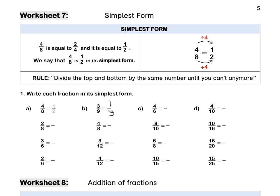For B, we can divide top and bottom by 3. Nine divided by 3 is 3 and 3 divided by 3 is 1. Let's look at C — we can divide 4 and 6 by 2. Six divided by 2 is 3 and 4 divided by 2 is 2. Lastly, 16 and 20 — I can divide both numbers by 2 to get 8 tenths, but that's still not simplest form. Dividing again by 2 gives 4 fifths. Alternatively, dividing 16 and 20 by 4 in one step: 16 ÷ 4 = 4 and 20 ÷ 4 = 5.